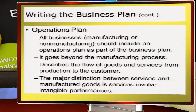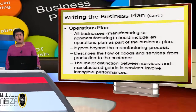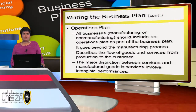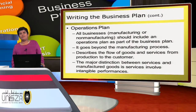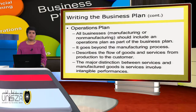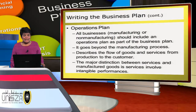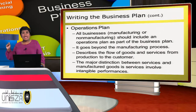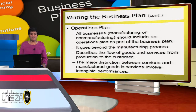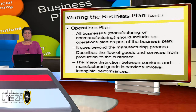We continue with the operation plan. All businesses — manufacturing or non-manufacturing — should include an operation plan as part of the business plan. It goes beyond the manufacturing process and describes the flow of goods and services from production to the customer. The major distinction between services and manufactured goods is that services involve intangible performance.